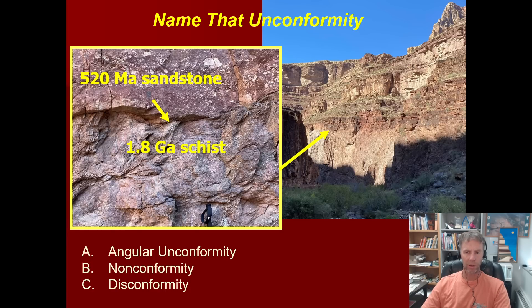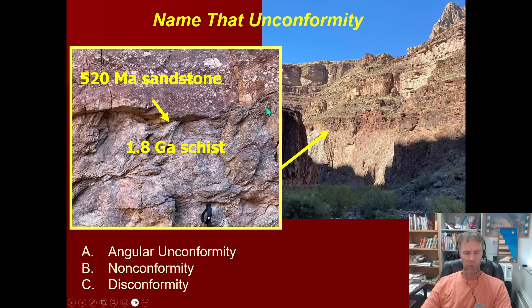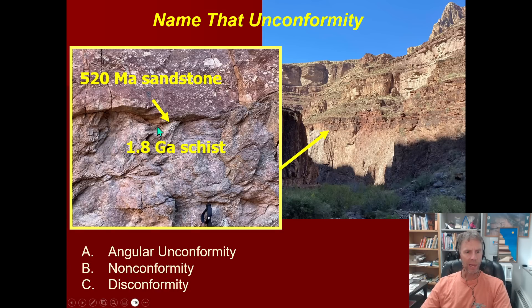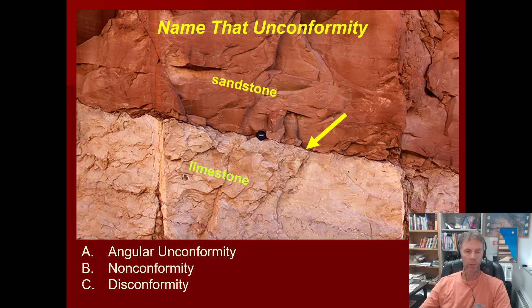Let's do another one. We're in the Grand Canyon, looking at a contact where we have 520 million-year-old sandstone sitting on top of 1.8 billion-year-old schist. Looking below the unconformity, we have metamorphic rock — and that means we're done. If we have an intrusive igneous or metamorphic rock below the unconformity, it has to be a nonconformity. That's the Great Unconformity, one of the famous ones in the Grand Canyon.